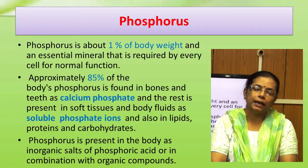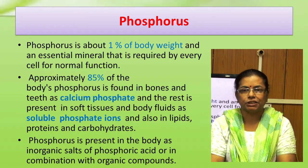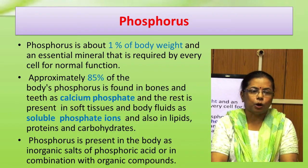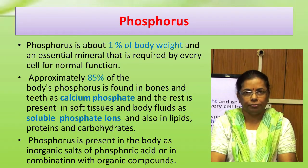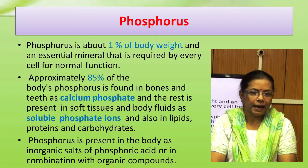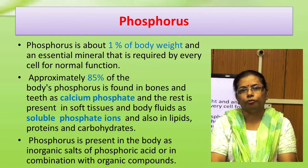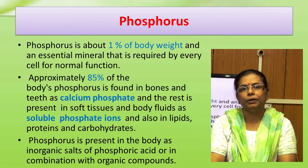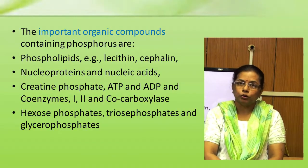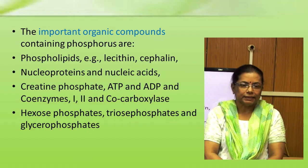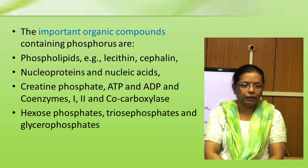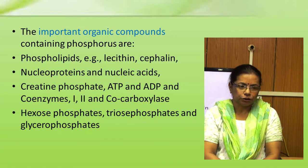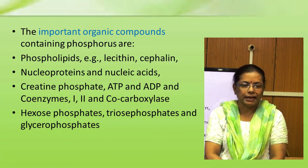Now, phosphorus. Phosphorus, along with calcium, contributes to the supporting structure in our body. It is the second most abundant mineral, about 1% of body weight, with 85% found in bone and teeth, and the rest in soft tissue and body fluids as soluble phosphate ions. Phosphorus is present in the body as inorganic salts of phosphoric acid or in combination with organic compounds such as phospholipids including lecithin and cephalin, nucleoprotein and nucleic acid, creatine phosphate, ATP, ADP, coenzymes, cocarboxylase, hexosephosphates, triosephosphates, and glycerophosphates.